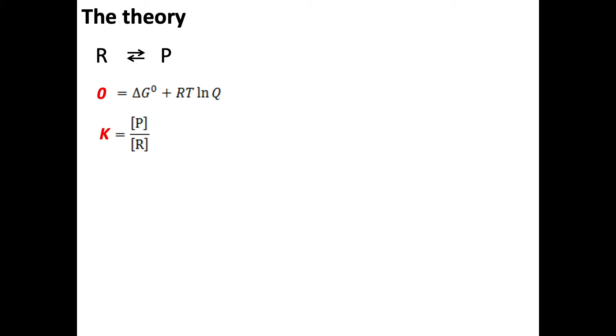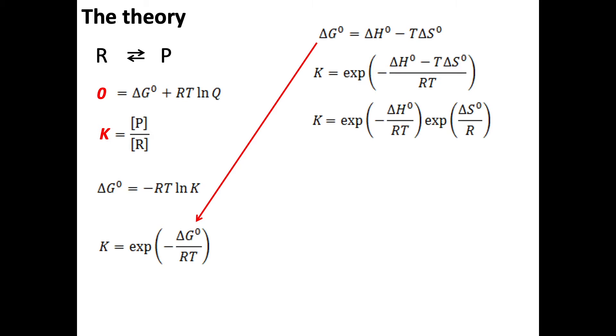This yields a temperature dependent relationship between the equilibrium constant and the standard free energy change. Isolating K gives this. Next, we will employ the relationship among free energy change, enthalpy change, and entropy change. By substitution, we get this. Now let's separate the factors and take the log of both sides, writing 1 over T as the independent variable. If we substitute the reaction quotient for K, we obtain this form.